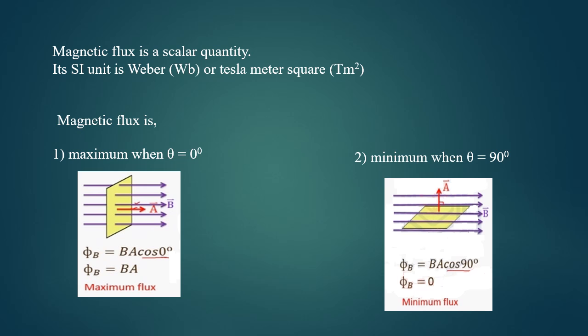One Weber is equal to one tesla meter square. Magnetic flux can be maximum when the value of theta is equal to zero, and minimum when the value of theta is equal to 90 degrees.